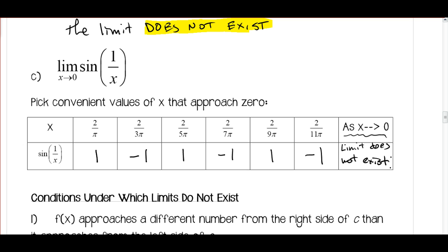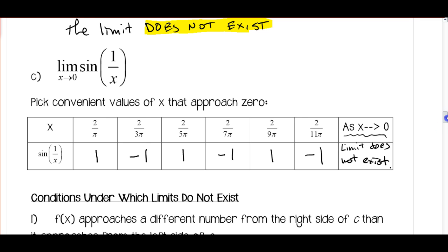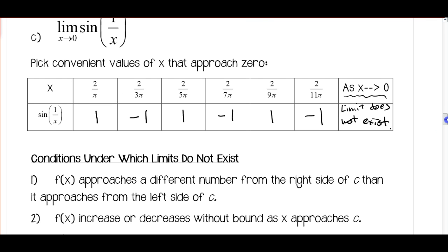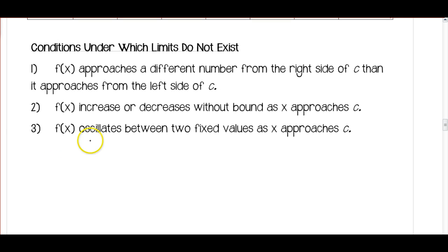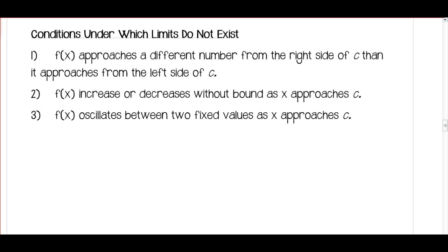This is the third case where the limit wouldn't exist: as you approach your x-value, the function is oscillating back and forth. Here's a summary of conditions under which limits do not exist. Number 1: f(x) approaches a different number from the right side of c than from the left side of c — that was example A. Number 2: f(x) increases or decreases without bound as x approaches c, i.e., it approaches infinity — that was example B. Number 3: f(x) oscillates between two fixed values as x approaches c — that was the third example.